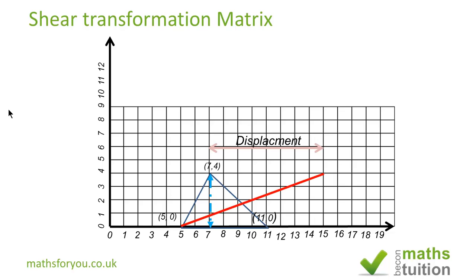Our transformed triangle is shown in red. Don't forget that on the invariant line nothing moves, because the y-value is 0. Now let's see if this is confirmed using the matrix.